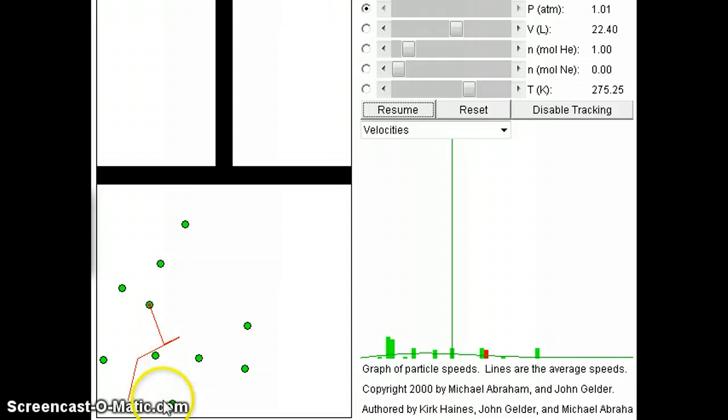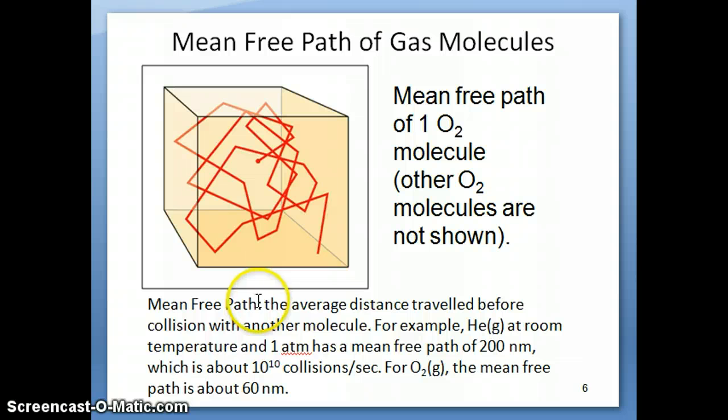That's the distance that we refer to as the mean free path. Again, the mean free path is the average distance traveled before a gas particle collides with another molecule. This distance is pretty short as it turns out.